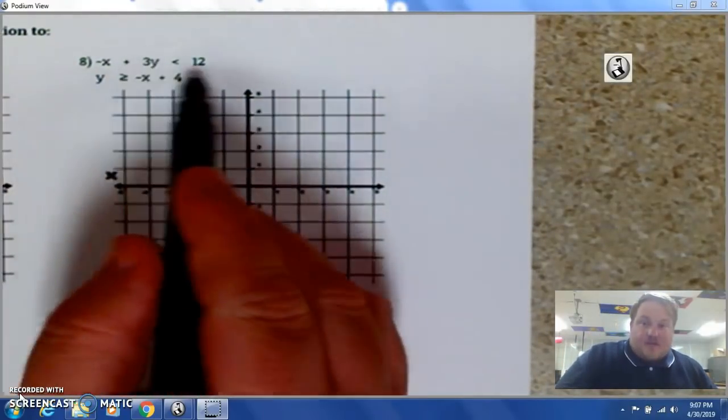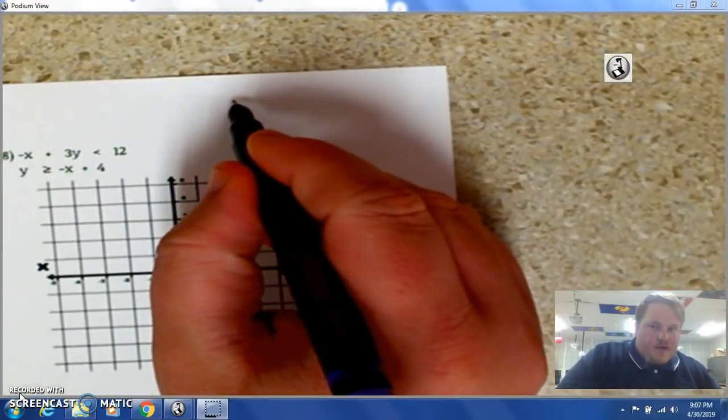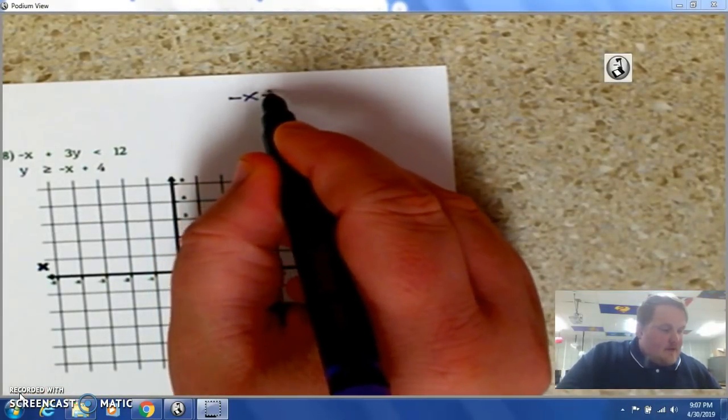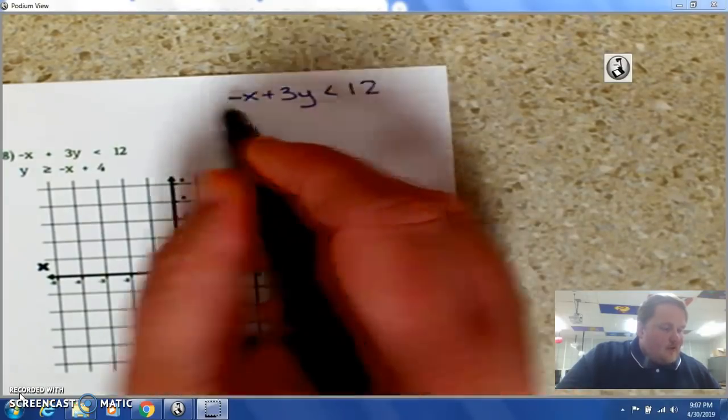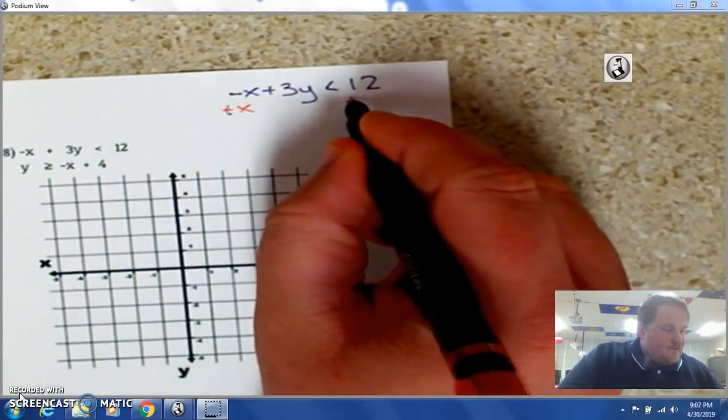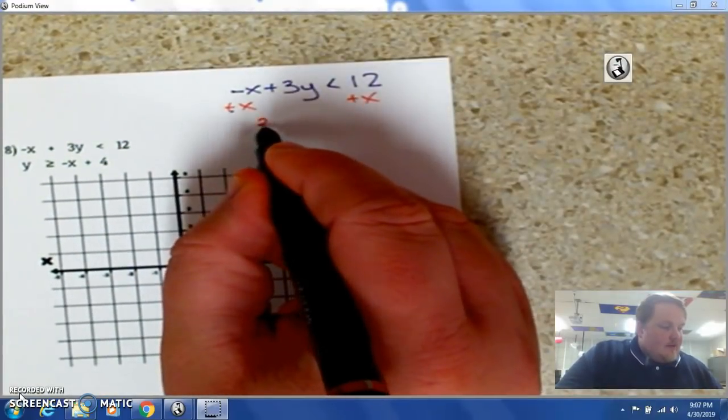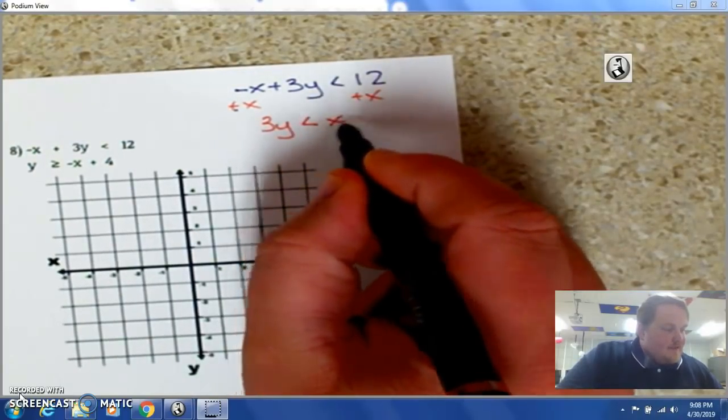Let's go ahead and look at number 8. In this case, we have to put that in a y equals form. So, I'm going to do that up here. I have negative x plus 3y is less than 12. I'm going to add x to both sides.